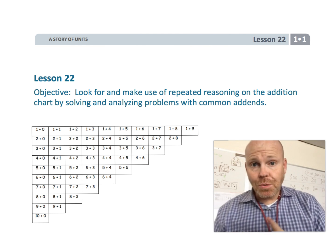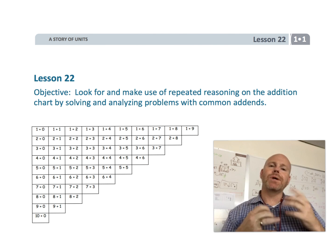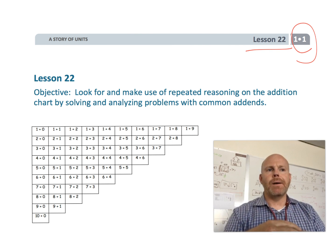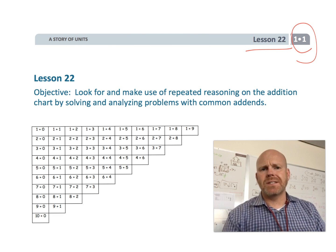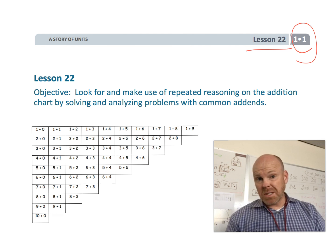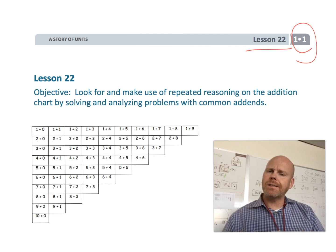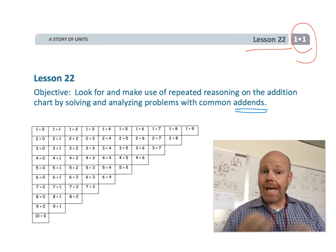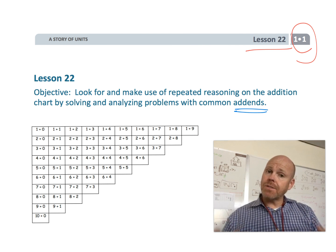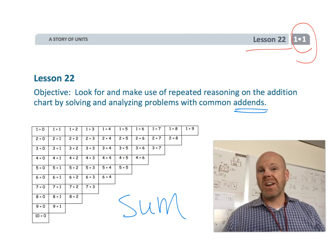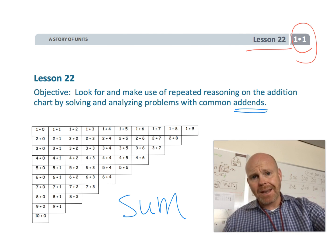This is first grade module one, lesson 22. Students are going to be looking at and making use of an addition chart, looking for patterns in it, and through it they'll review doubles and doubles plus one. The key vocabulary term is addends — an addend is one of the two numbers being added. You might as well also introduce the word sum, so that addend and sum become second nature to students.